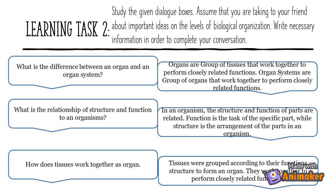Number 2: In an organism, the structure and function of parts are related. Function is the task of the specific part, while structure is the arrangement of the parts in an organism. Answer: What is the relationship of structure and function to an organism? Number 3: How do tissues work together as an organ? Answer: Tissues are grouped according to their function and structure to form an organ. They work together to perform closely related functions.